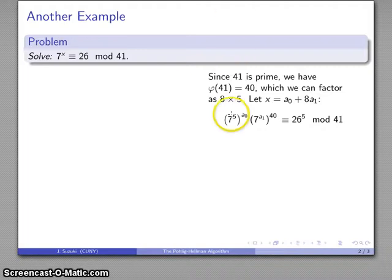I know what 7 to the 5th is. I know what 26 to the 5th is. This to the 40th is congruent to 1, so that term drops out. And my problem simplifies to this.